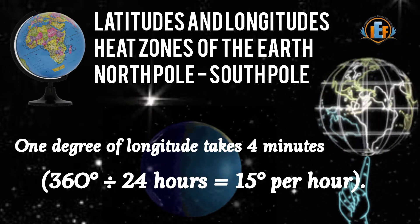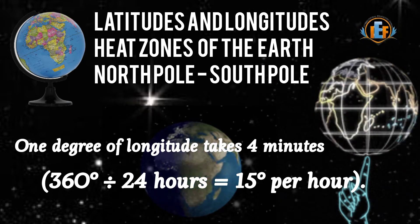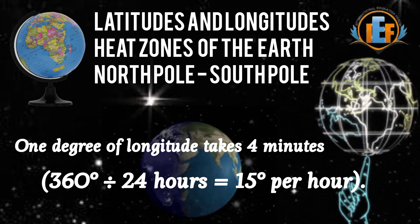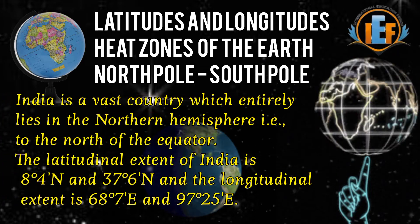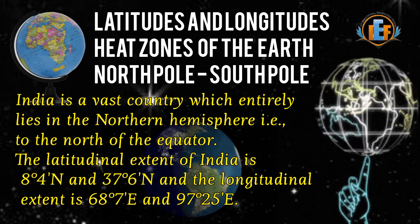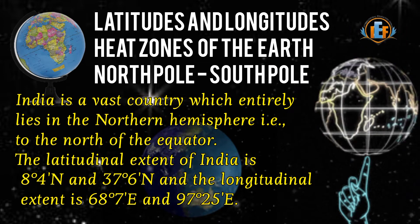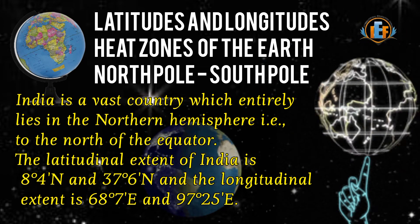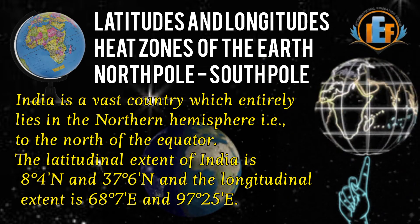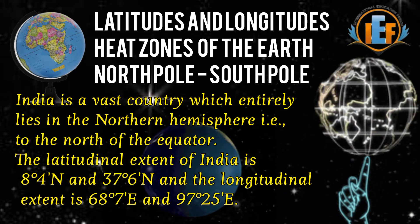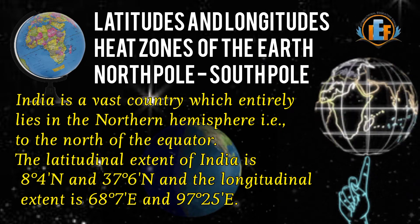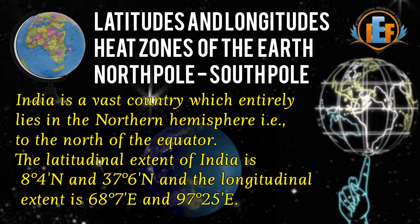The intersection of latitude and longitude together is known as the grid. The grid helps us to know the location of a place. For example, India lies at 8 degrees north latitude to 37 degrees 6 north latitude, and 68 degrees 7 east to 97 degrees 25 east longitude.